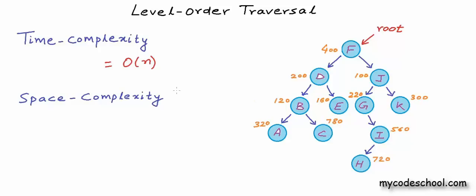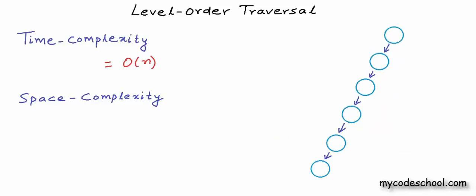Now let's talk about space complexity. Space complexity is the measure of the rate of growth of extra memory used with input size. We are not using a constant amount of extra memory in this algorithm — we have this queue that will grow and shrink during execution. Assuming the queue is dynamic, the maximum extra memory used depends on the maximum number of elements in the queue at any time. For a tree where each node has only one child, we will have at most one element in the queue at any time, and space complexity will be O(1).